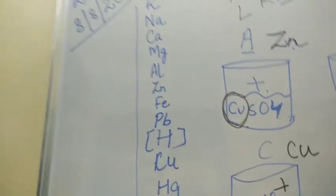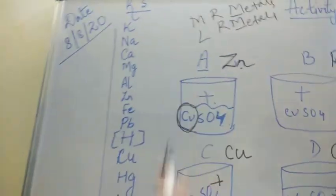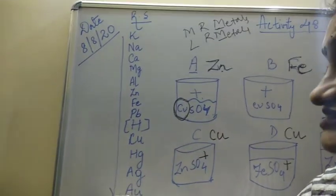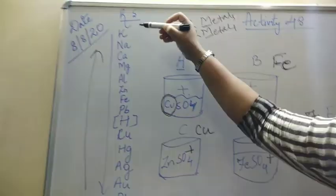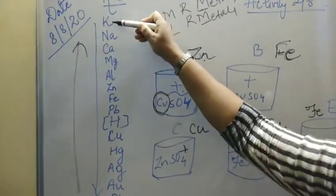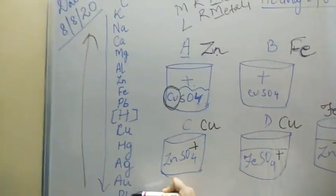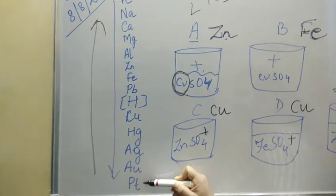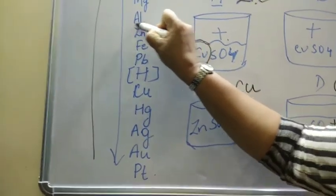That is, from top to bottom, the reactivity series, the reactivity decreases of that metal. So let me check zinc and copper, which is more reactive. So if zinc is here, just check it children. I have encircled over here. And copper is here.